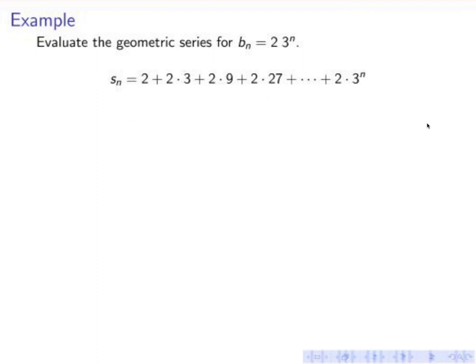Let's look at an example. The geometric sequence b_n is 2 times 3 to the n, and the geometric series is given right here. So it's 2 plus 6 plus 18 plus 2 times 27, and so on.